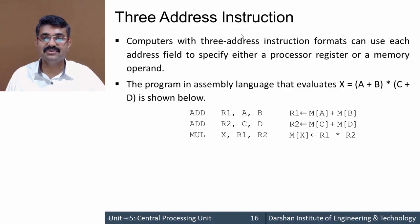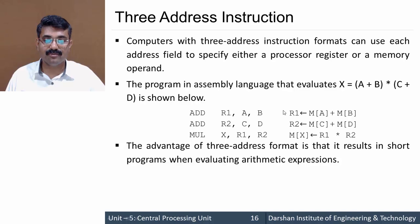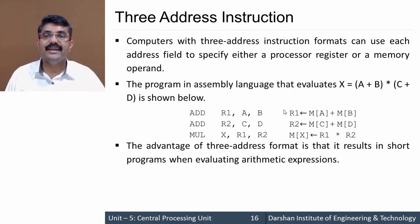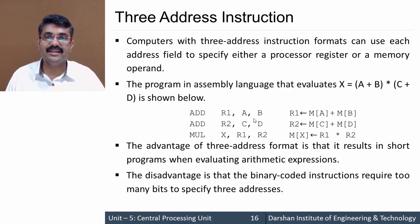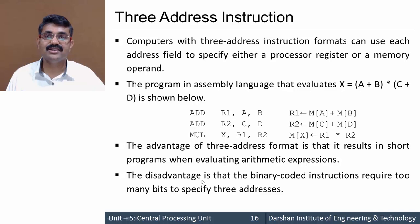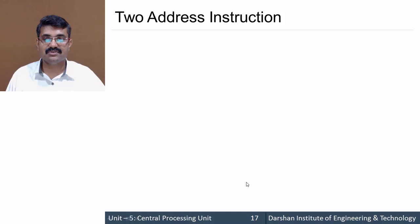The advantage of three address instruction format is it results in shorter code — the assembly language code written is of shorter length. The corresponding disadvantage is that since we have three operands, the binary-coded instruction requires too many bits to store the three addresses. So we get the advantage of shorter code but the disadvantage of larger instruction size.